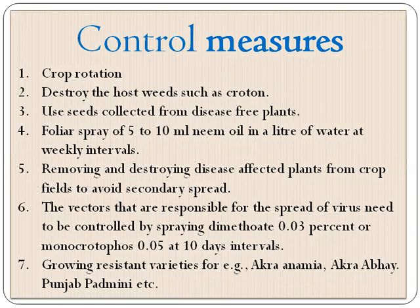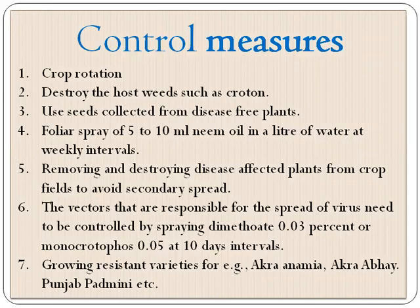To control this disease, crop rotation is one popular cultural method. Destroy host weeds such as Croton. Use seeds collected from disease-free plants. Apply foliar spray of 5 to 10 ml neem oil per liter of water at weekly intervals. Remove and destroy disease-affected plants to prevent secondary spread. Control the vectors responsible for the spread of the virus by spraying Dimethoate at 0.03 percent. Also, grow resistant varieties such as Arka Anamika, Arka Abhay, and Jabadineme to control the disease.